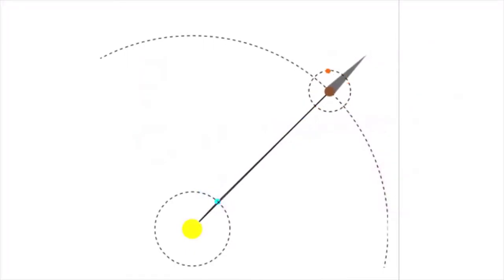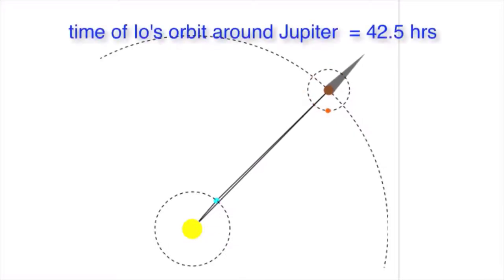Galileo and others found that Io always, that is year after year, took 42.5 hours to orbit Jupiter.